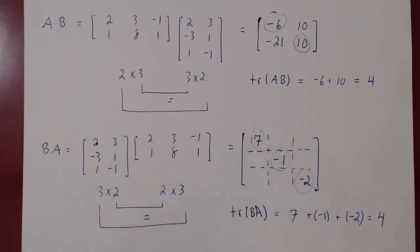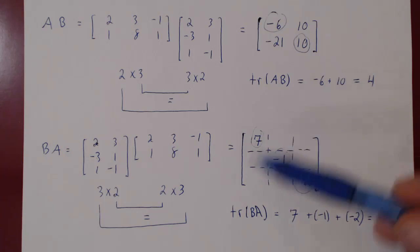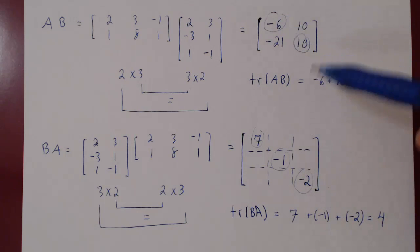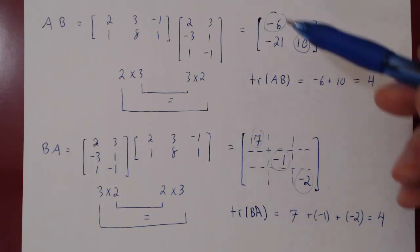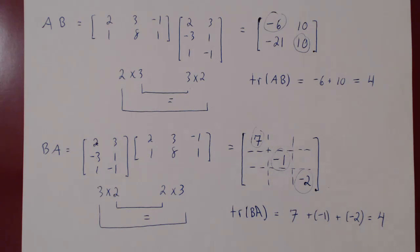If you think about this, it is quite astonishing. Whereas AB is a 2 by 2 matrix, BA is a 3 by 3 matrix — the entries are very different — and yet if you add the entries on the diagonal of both matrices, the answer is the same. This is not an accident. The trace of AB, if AB and BA are both defined, they will always have the same trace. That property I leave to you as an exercise. And this completes our discussion of the trace.